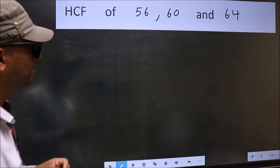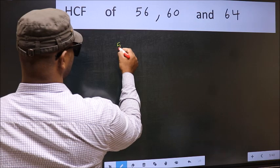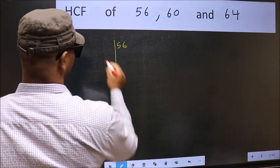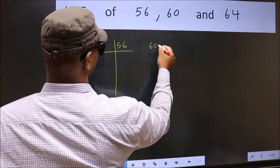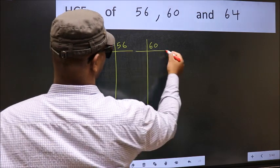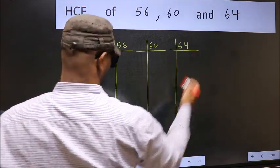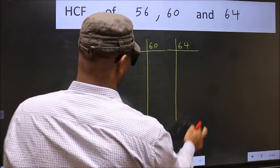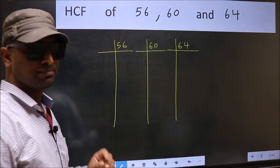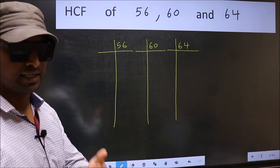What I mean is 56, 60, 64. This is your step 1. Next.